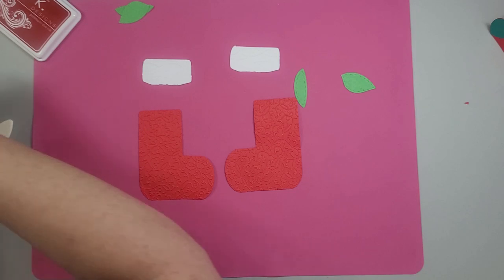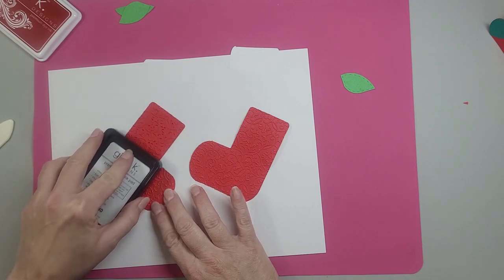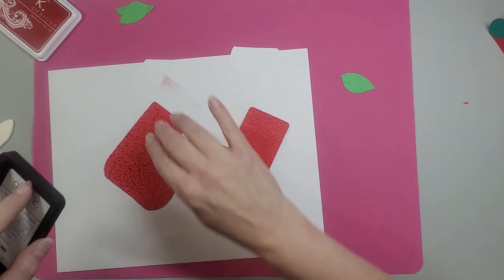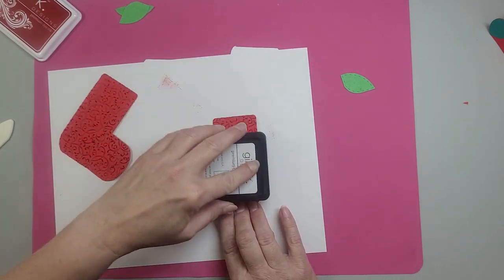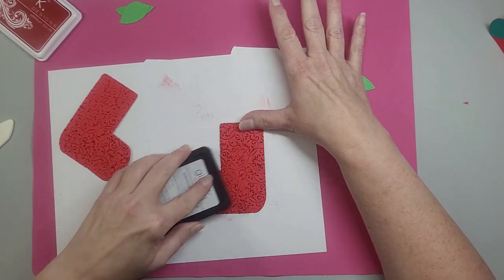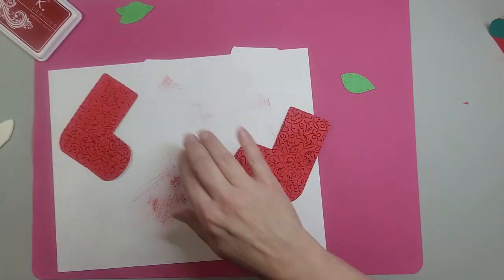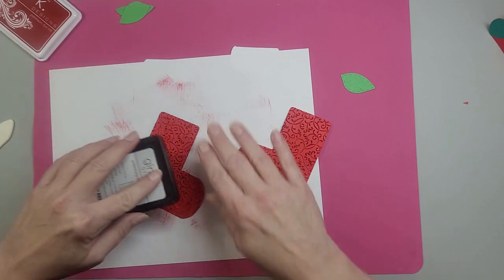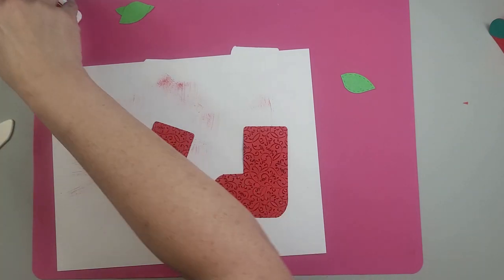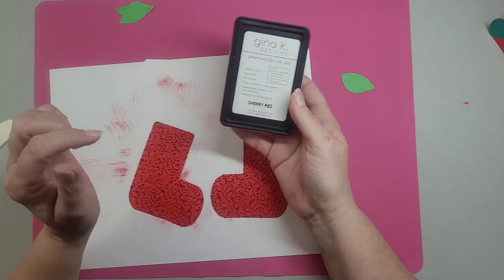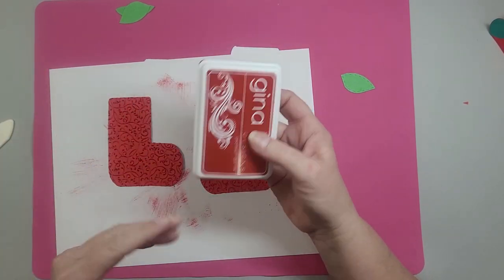So I'm going to do this on the back side of my template here. Just take this and rub it across. I think that's good. And this color I'm using is cherry red and that's just because it was darker than my paper. So whatever color red you're using or whatever other color, it'll change whatever color you're using.